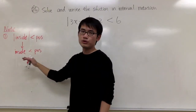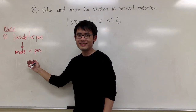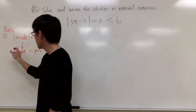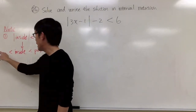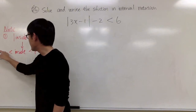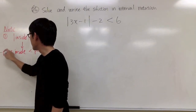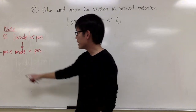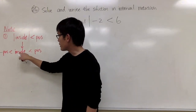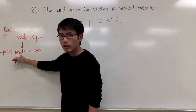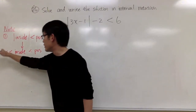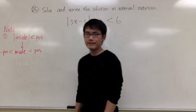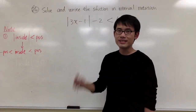The expression stays the same on the right side, maintaining that symbol. On the other end, I will make it negative — whatever the positive number is. So I just put the inside expression in the middle, between the negative and positive version of that number. This is the first situation.